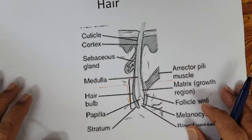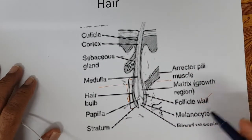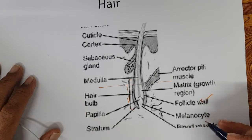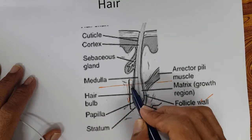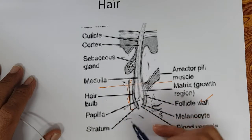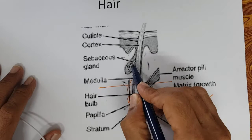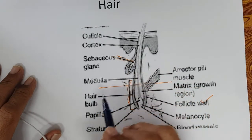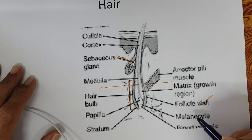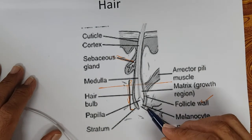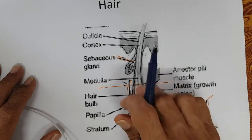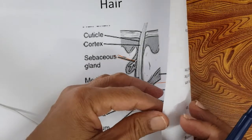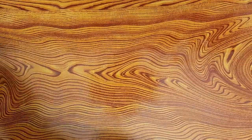This is a picture of the hair follicle — it is below, inside the scalp. This is the sebaceous gland; every hair follicle is associated with a sebaceous gland. These are the muscles and melanocytes which give color to the hair, as we discussed when studying hair structure.